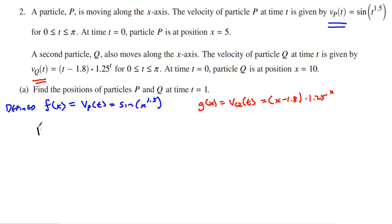So if I want to find the position of particle P, I need to start with this five where particle P started, plus the integral from zero to one, because it starts at zero, it goes to time equals one of f of x dx. Of course, you could put integral from zero to one of vp of t dt. This worked out in my calculator as 5.37066.